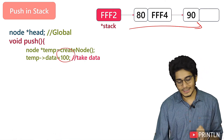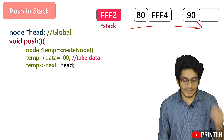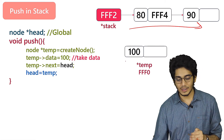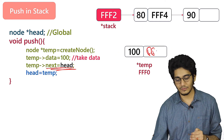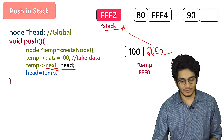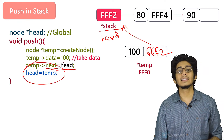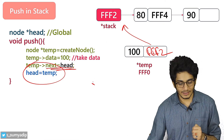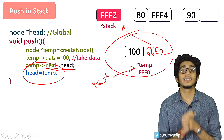Then we'll take the data from the user — you can take data from the user or initialize it. We'll just set temp->next equals to head, meaning our temp will be pointing to the head node. Let's say we have allocated this memory — when we write temp->next equals to head, it will point to fff2. Now temp will be pointing to head or stack. Then we'll just assign temp into head.